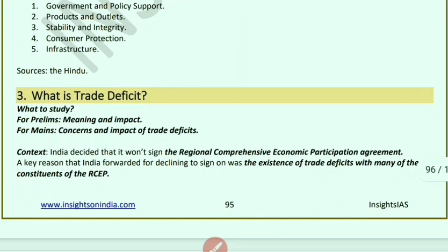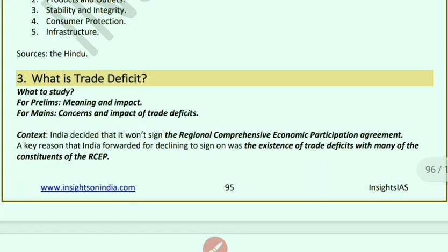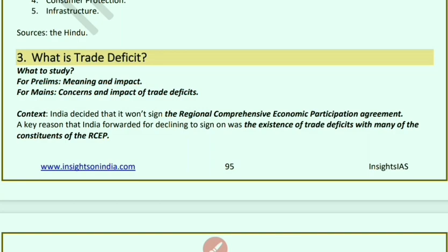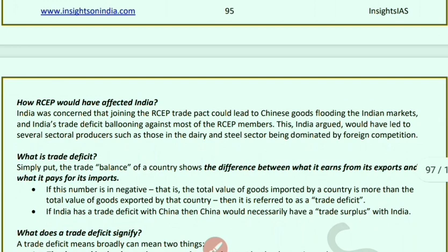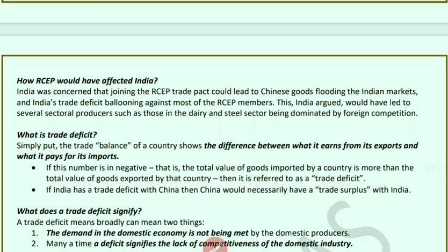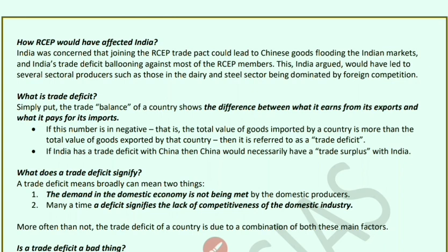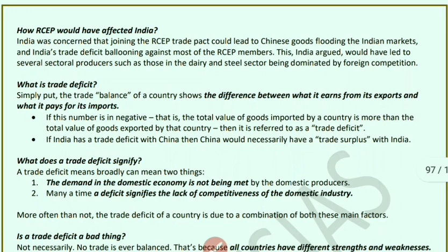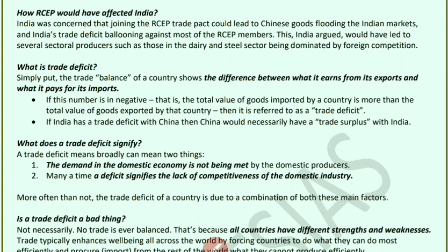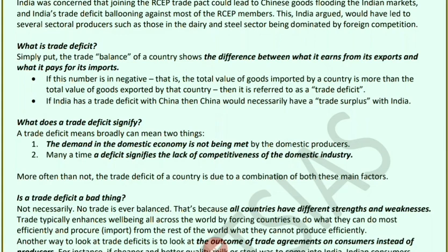Next, trade deficit. India has decided not to sign RCEP — the Regional Comprehensive Economic Partnership — primarily because India's trade deficit is already very large. If India joined RCEP, Chinese goods would flood Indian markets, further widening the trade deficit. India also argued that sectoral producers, especially from Australia and New Zealand in the dairy sector, would dominate Indian producers. Trade balance is the difference between exports and imports; when imports exceed exports, it is called a trade deficit. India has a trade deficit with China, while China has a trade surplus.